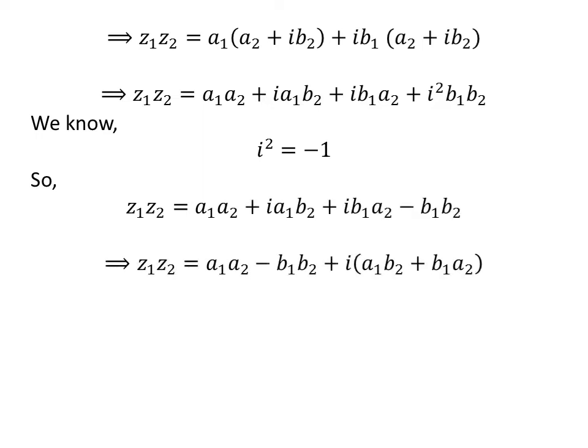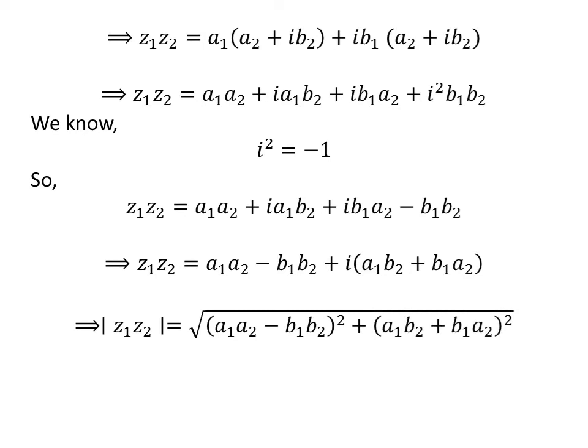So, z1 times z2 is equal to (a1·a2 minus b1·b2) plus i times (a1·b2 plus b1·a2). Therefore, modulus of z1 times z2 is equal to the square root of (a1·a2 minus b1·b2) squared plus (a1·b2 plus b1·a2) squared.